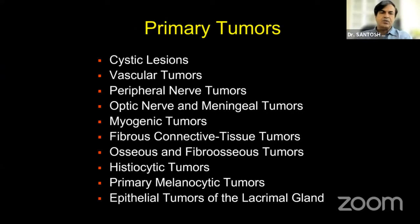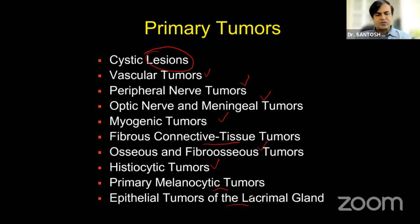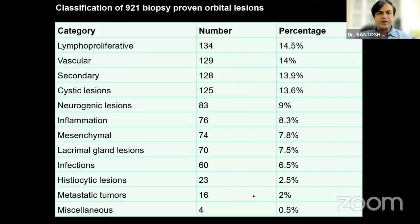This is one more way of classifying orbital tumors based on etiology. Cystic lesions are not tumors, but they come to an ocular oncologist, so they are included. Otherwise it's vascular, peripheral nerve tumors, optic nerve and meningeal tumors, myogenic, fibrous connective tissue, osseous and fibro-osseous, osteocytic, melanocytic, and epithelial tumors of the lacrimal gland. This is a simple classification.